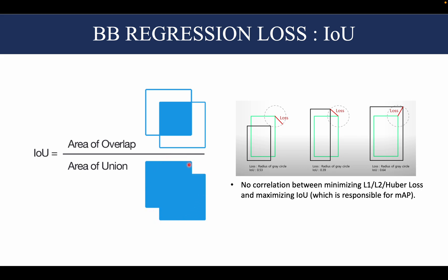Why do I specify the IoU now? Because if we talk about the L1, L2, and Huber loss that we just saw, we find that there is no correlation between minimizing these losses and maximizing the IoU, which in turn is responsible for giving us a good mAP.